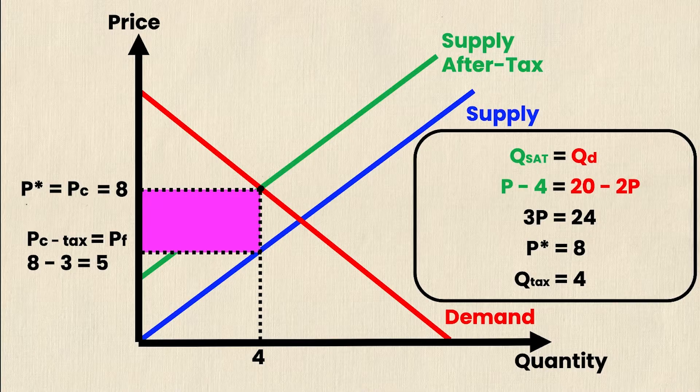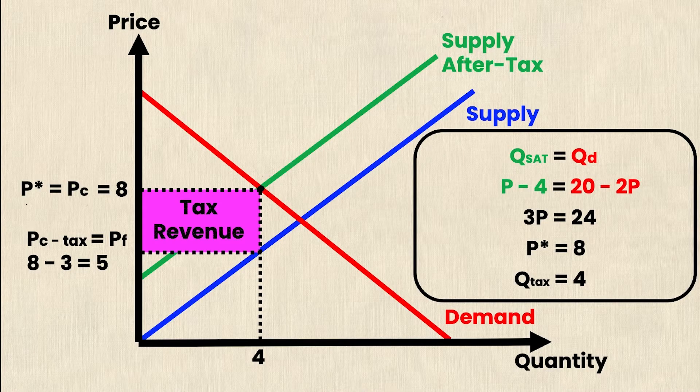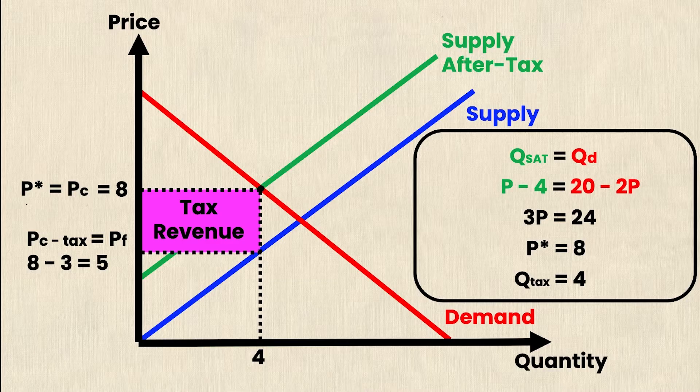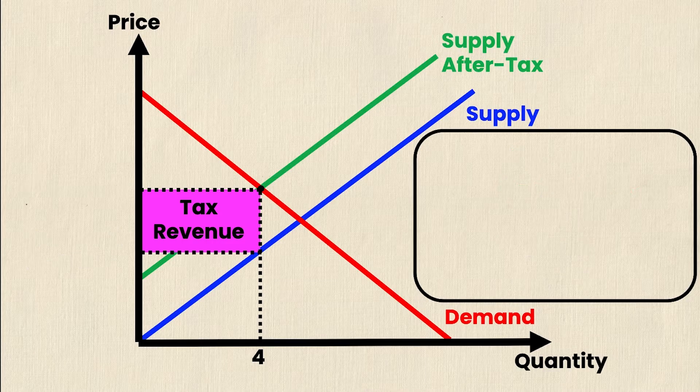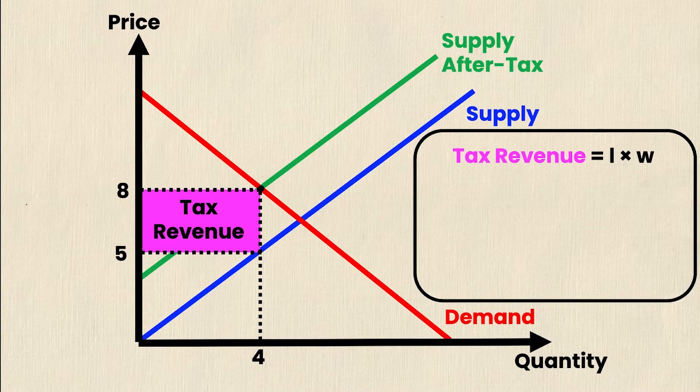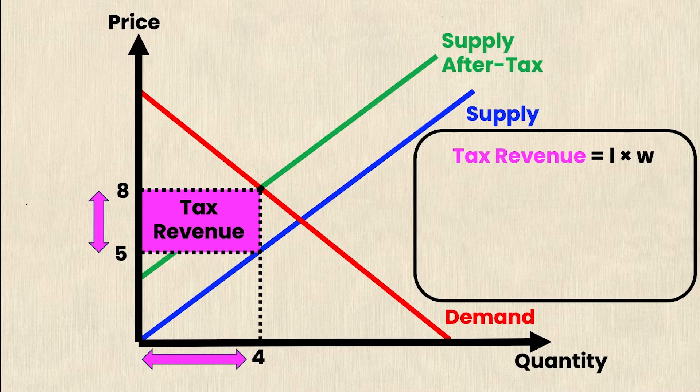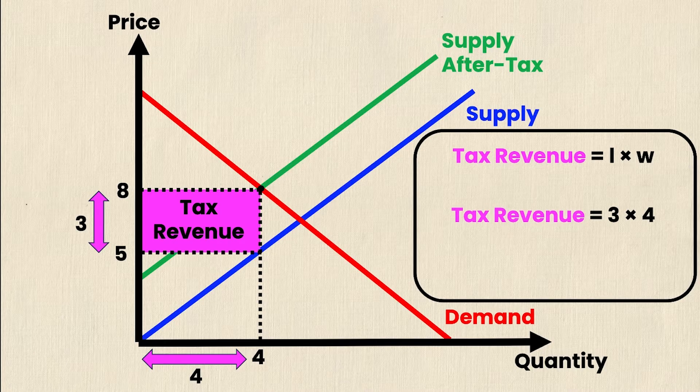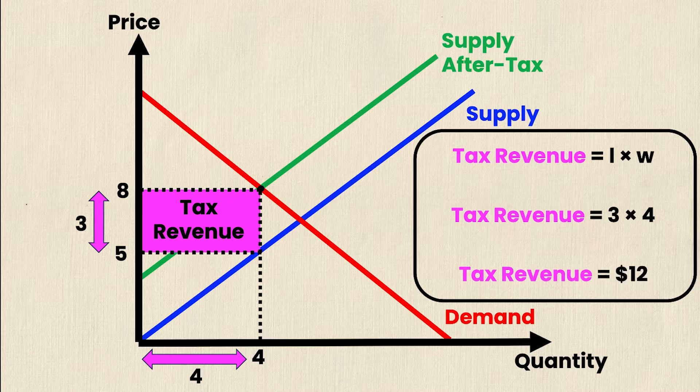So now I'm left with this rectangle that we talked about in part 1. And we obviously know this is our tax revenue. Now calculating is actually quite easy. This is simply a rectangle. And the formula for a rectangle is obviously just length times width. So tax revenue is just equal to length times width. And the length and the width are right here. So substituting those in, I get tax revenue is equal to 3 times 4. And so obviously with some simple algebra, tax revenue is equal to $12 in this example.